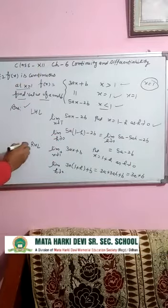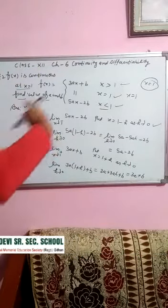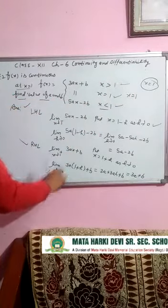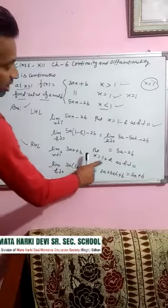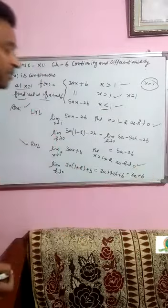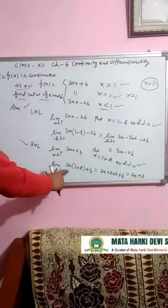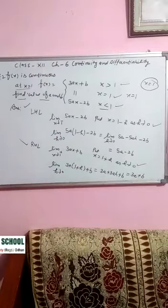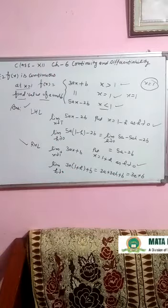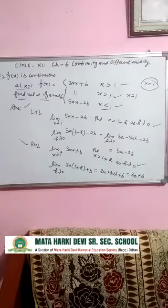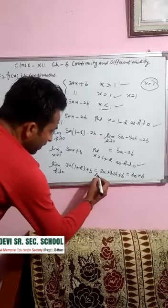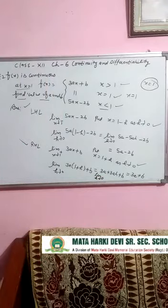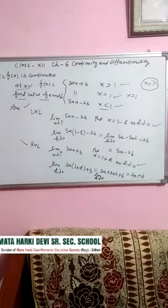Uske baad right hand limit. Right hand limit mein x greater than 1 wali value use karenge: 3ax plus b. Yahan x equal to 1 plus h put karenge as h tends to 0. Toh 3a(1 plus h) plus b = 3a plus 3ah plus b. h ki value 0 karo, toh right hand limit = 3a plus b.